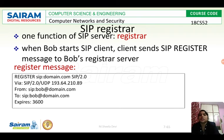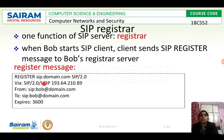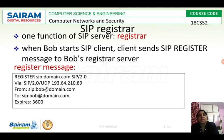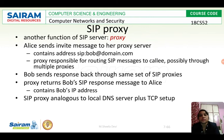Looking at the register message: it contains the domain name and the sender's IP address, which are sent to the registrar server. For example, from sip.bob to the SIP registrar server, with an expiry of 3600 seconds. This entry must be periodically refreshed to keep it alive in the registrar server.